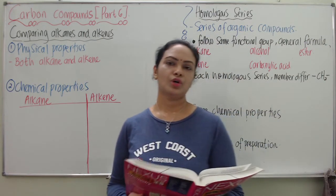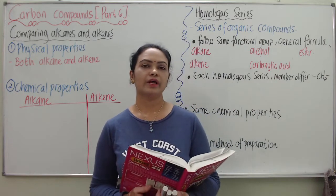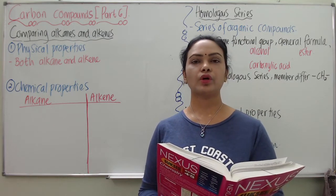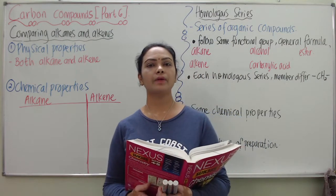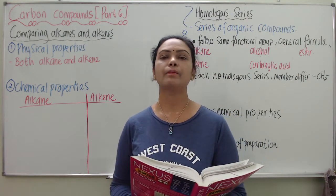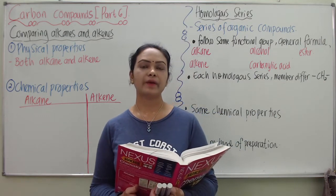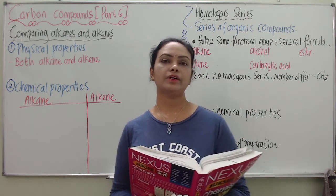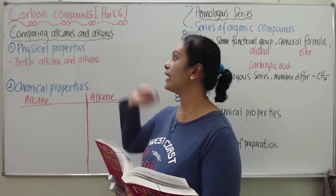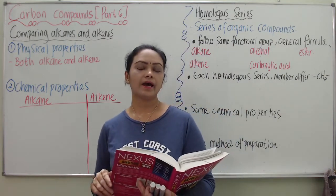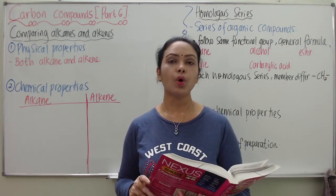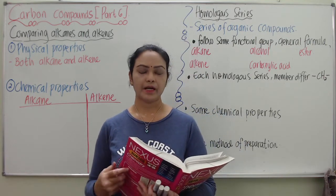Hello. Good day to all my students. Today we are here to continue on the chapter Carbon Compounds where teacher will be discussing part 6. The main topic of our discussion today will be on comparing alkane and alkenes, and I will also cover homologous series. Now let's start.